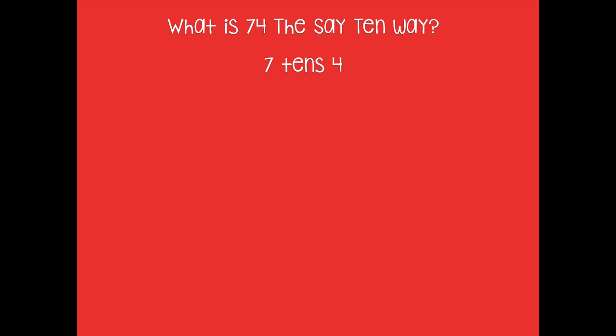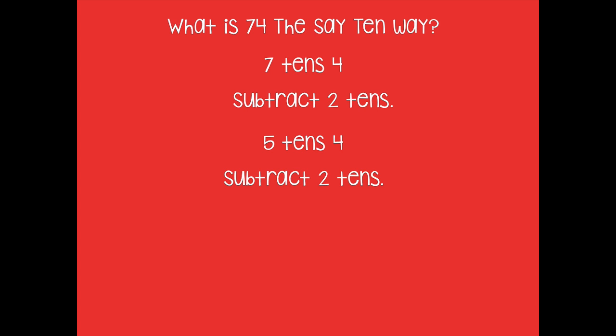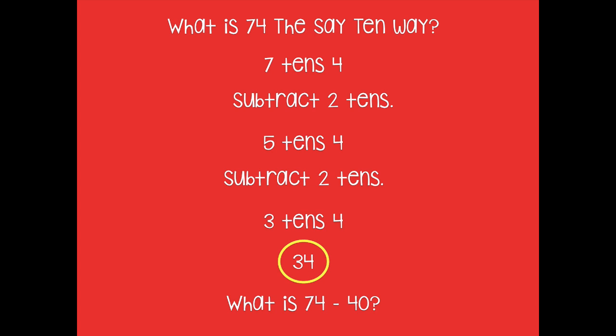Awesome! Let's look at another one. What is 74 the Say Ten Way? Yeah, it's seven tens four. Now let's subtract two tens — you're leaving your ones alone, just doing seven tens minus two tens — so it's five tens four. Now let's subtract two more tens. What do we get the Say Ten Way? Three tens four. Three tens four is also 34 in standard form. So friends, what is 74 minus 40? Yeah, it's 34, because we subtracted two tens and two tens, which is the same as 40.